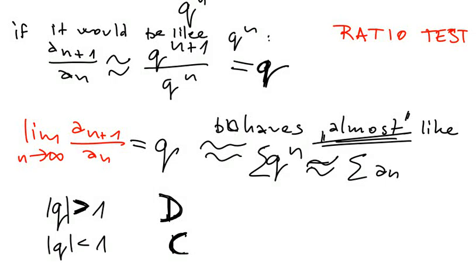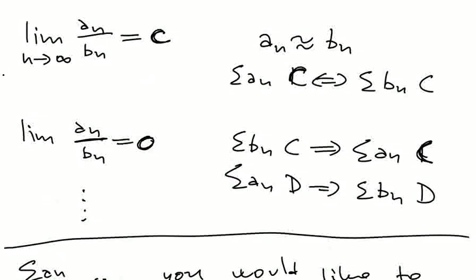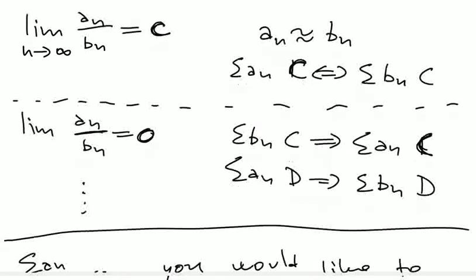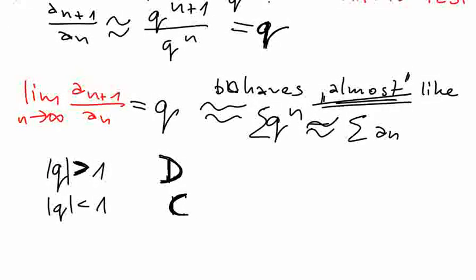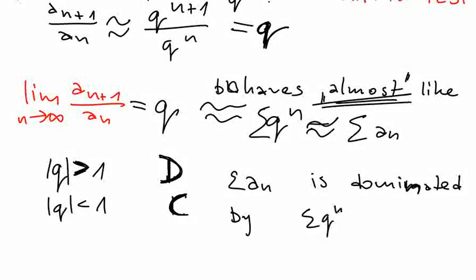So why? Because the thing is, we would like to compare it and we would like to use one of these things. We would like to say that after some time, the terms of AN is dominated by Q to N for Q smaller than 1. And if we can say so, then we know that this thing here converges and therefore this also converges.